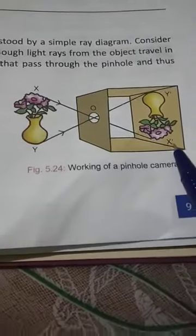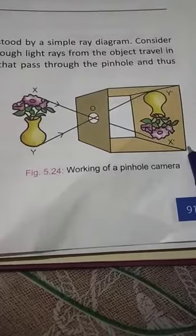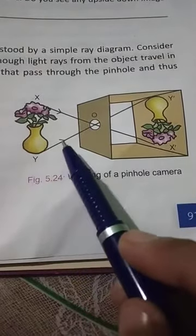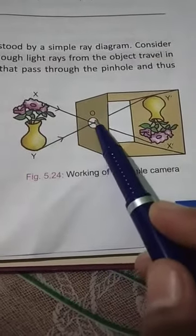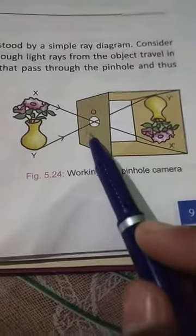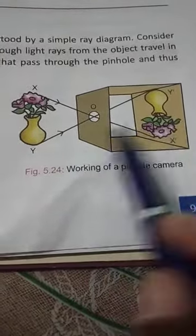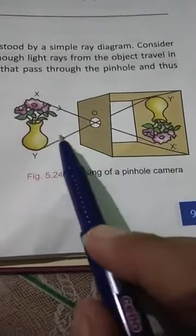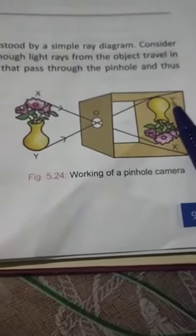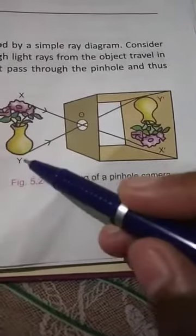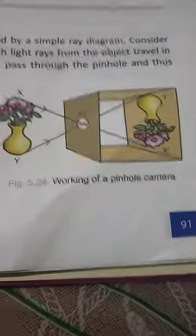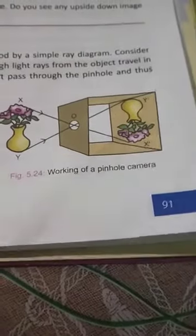O means this is the hole. A ray of light from point X travels along X-O, passes through this hole, and finally falls on the screen at point X dash. Similarly, a light ray from point Y travels along Y-O, also passes through the hole, and reaches the screen at point Y dash. All other rays from X and Y also pass through the pinhole. While passing through the pinhole the light rays intersect and cross each other, and thus the final image X dash Y dash is an inverted image.